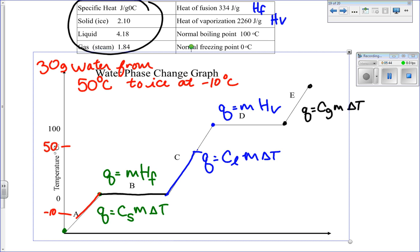So the first thing I'm looking at is I'm starting here. So obviously I'm using this formula. So the specific heat for the liquid is right there. It's 4.18. I know my mass in the problem. Mass is always your grams, 30 grams.